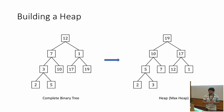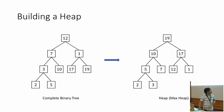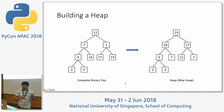Now let me come to another example: building a heap. On the left side we can see a complete binary tree, and on the right side it's converted to a max heap. Max heap means any node is greater than both of its children — here 19 is greater than 10 and 17, and 17 is greater than 12 and 1.